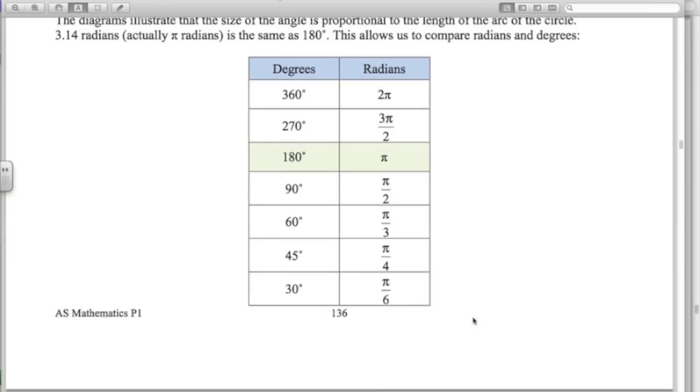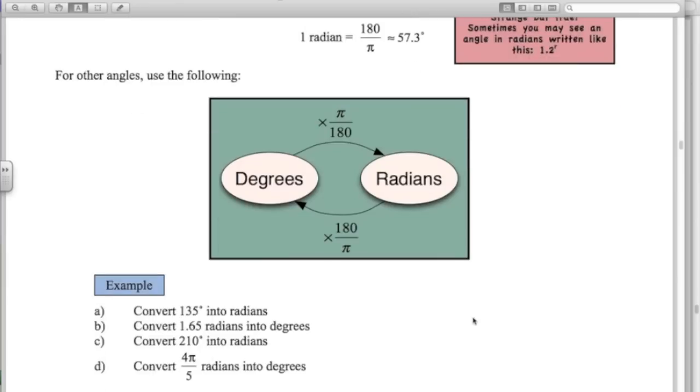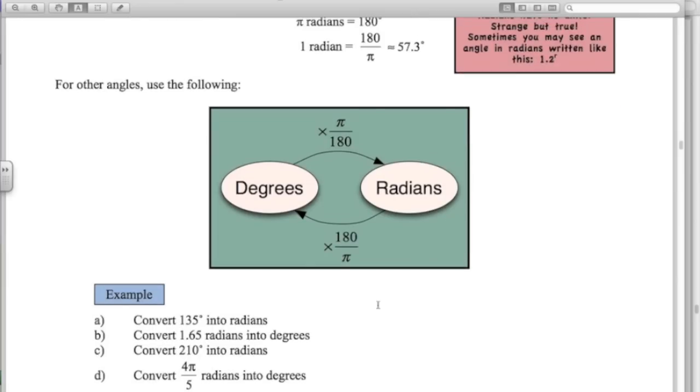For other angles that aren't exact multiples of pi, I use this little thing right here. So to convert something from degrees to radians, I multiply by pi over 180.